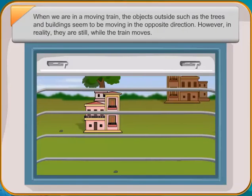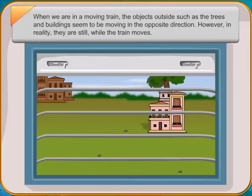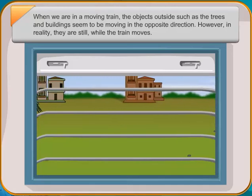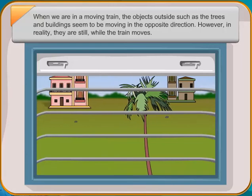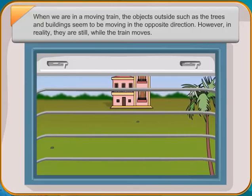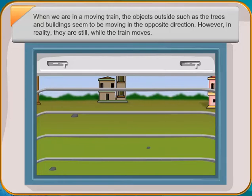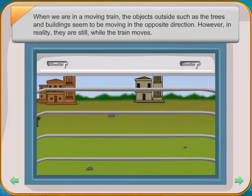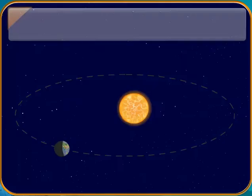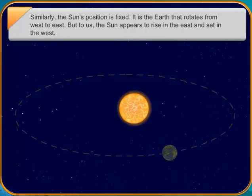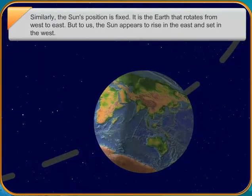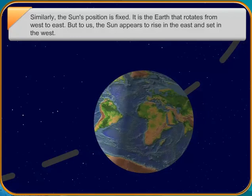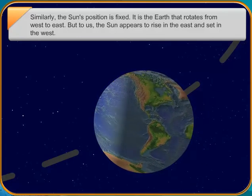The Earth moves around the Sun in a fixed elliptical path. The path is called its orbit. The Earth moves in its orbit at a speed of 30 kilometers per second. All planets also move around the Sun in fixed orbits. Each planet has a different orbit, so that they don't bump into each other. The movement of the Earth around the Sun is called revolution.